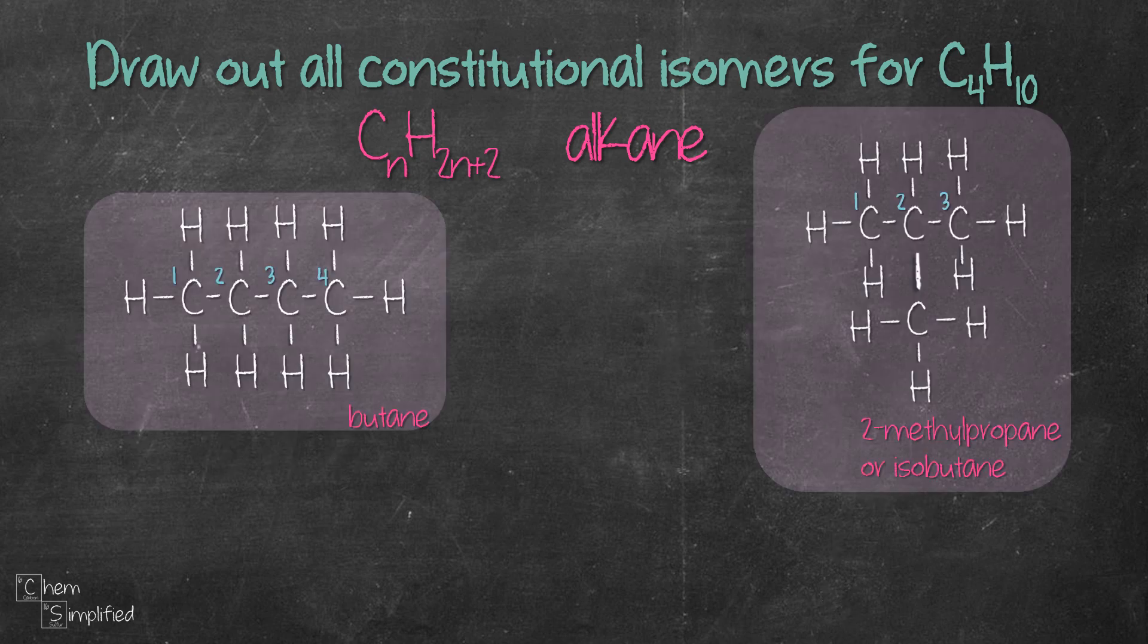These are the two isomers we've drawn for C4H10. But we can't draw any more isomers for C4H10 because if we were to start with two carbon chain like this, and then we have two extra carbons.